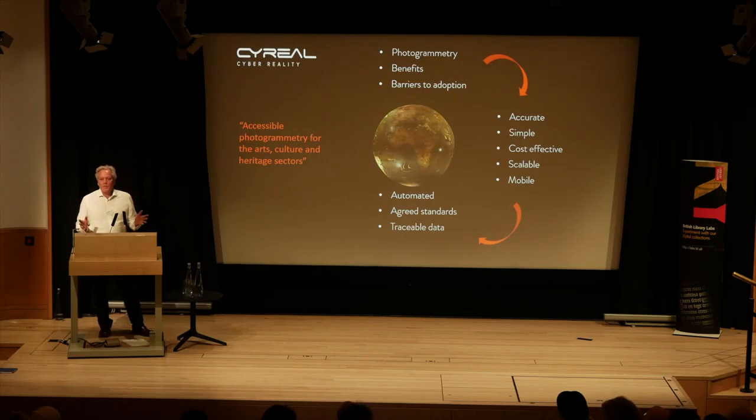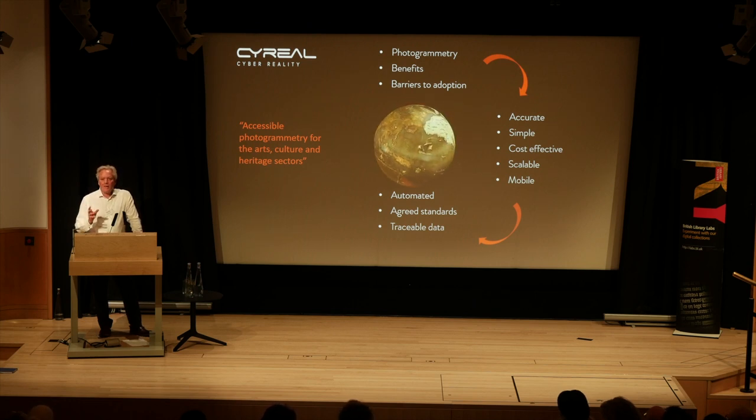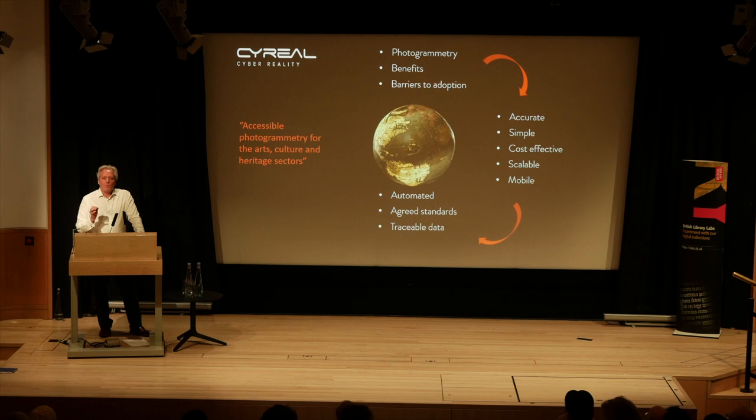Photogrammetry, according to Wikipedia, is the science of making measurements from photographs. To do that, we have to take a large number of photographs of an object or a scene — today we're just going to talk about objects. We run them through some software, and the software analyzes those photographs and builds up a three-dimensional model.